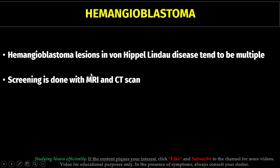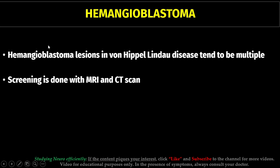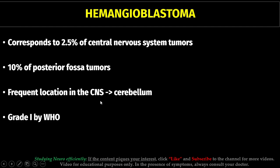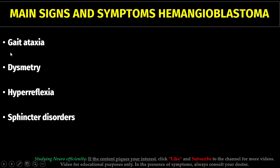The main radiologic exams we use are MRI and CT scan. The main signs and symptoms of hemangioblastoma are gait ataxia, dysmetria, hyperreflexia, and sphincter disorders. These symptoms are common in patients with cerebellar disease, which reflects the main CNS location of hemangioblastoma.